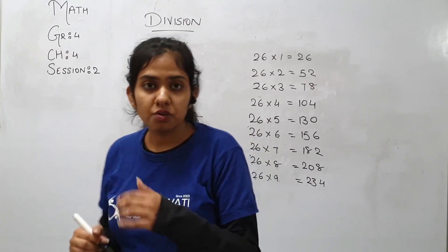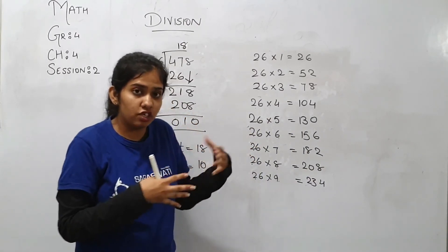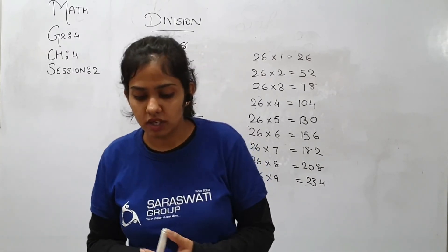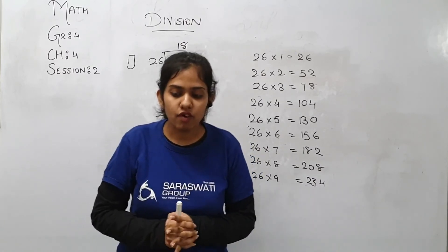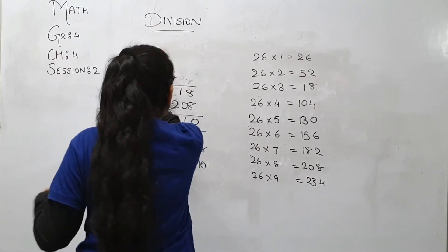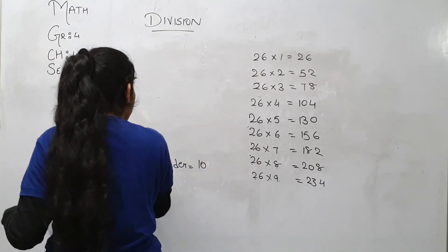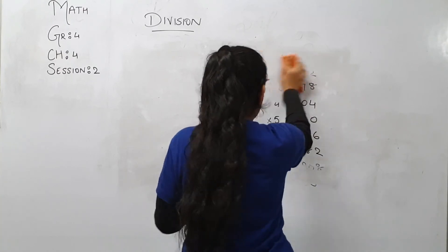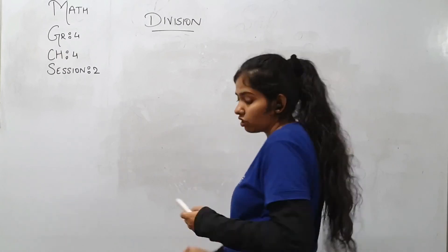So in this way you are supposed to solve your sums. Still if you have any doubt, then just recap this video on how to divide the sums. Then question 3 is all about filling the missing digits in the following divisions and find out the quotient and the remainder. Half of the sum is already solved — it's just a missing digit. So let us solve one sum of that also.